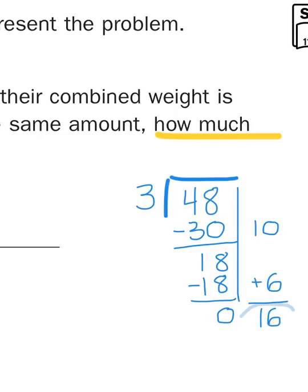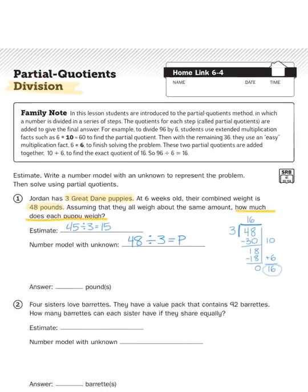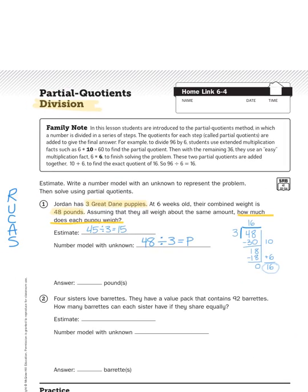16 is my total quotient, so that is the answer to my problem. 48 divided by 3 is going to give me 16. And that's my answer.